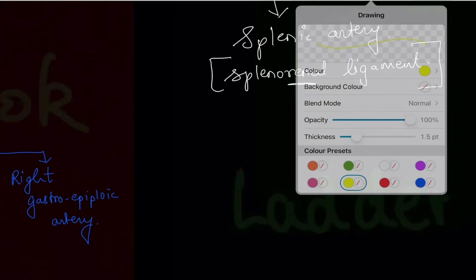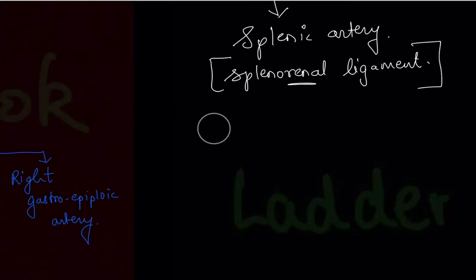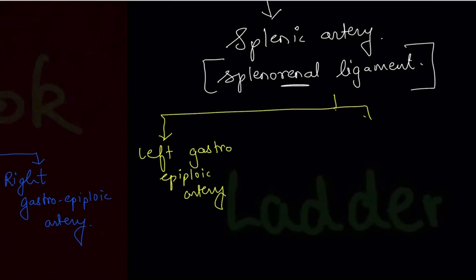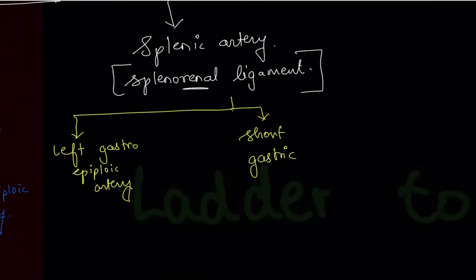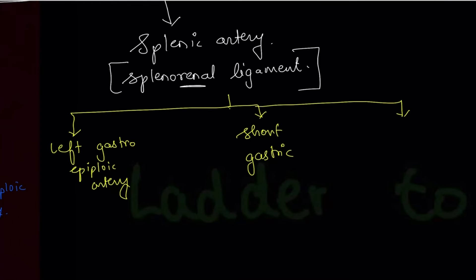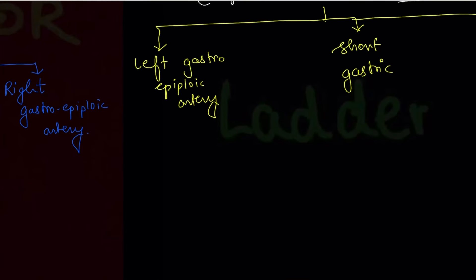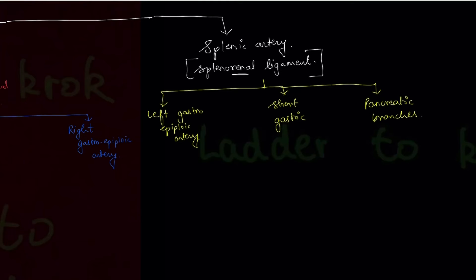The branches of the splenic artery are: first, the left gastroepiploic artery; second, the short gastric artery — this is a common exam question, and the answer is that the short gastric artery comes from the splenic artery. Third, it gives pancreatic branches — so if asked about the arterial supply of the pancreas, the answer is the splenic artery. It also gives branches to the stomach and to the spleen itself.